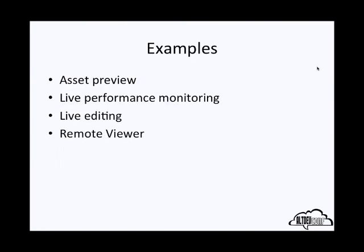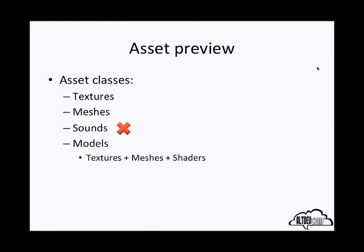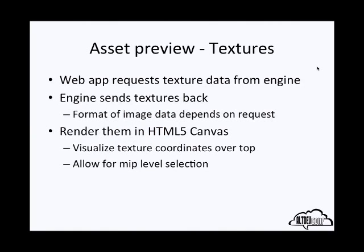I've broken down assets into different classes: textures, meshes, sounds, and models, which are a combination of textures, meshes, and shaders. I won't be discussing sounds because I really don't know anything about audio programming, but it's something that would have to be considered. For asset preview of textures, the web app requests the texture data from the engine, and the engine sends this texture data back. Then the web application could render them in an HTML5 canvas with texture coordinates visualized on top and interactive MIP level selection.